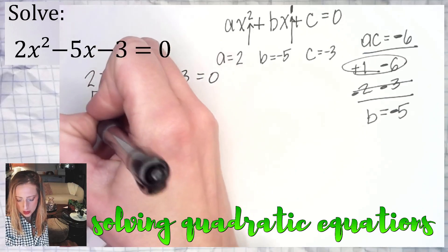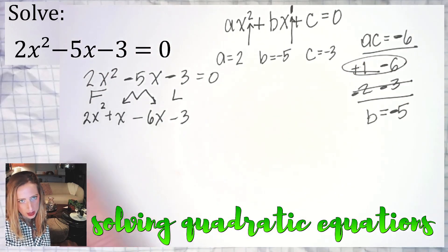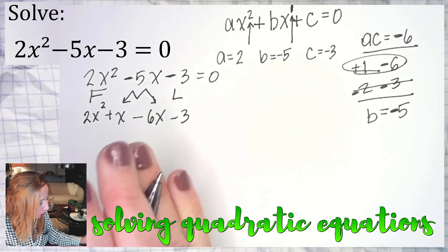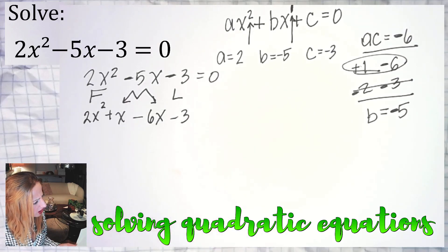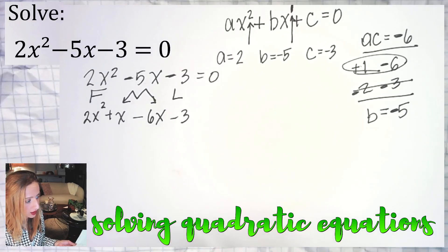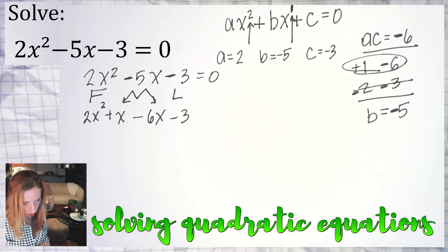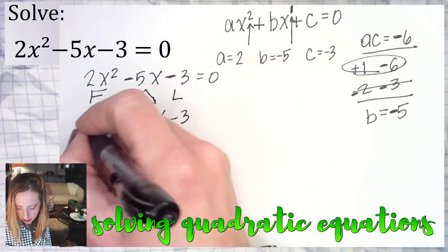Now what you can do is you would factor from here by grouping. I go into a lot of detail factoring by grouping on other examples. For instance, for number 17, a couple examples ahead, 2x squared plus x minus 10 equals zero. I go into detail there. I'm going to go more into the shortcut method instead here.